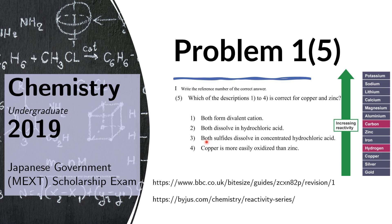The same applies to choice three: both sulfides dissolve in concentrated hydrochloric acid. Zinc is more reactive than hydrogen, so it might dissolve, but copper is less reactive than hydrogen, so it cannot replace hydrogen there. Choice four says copper is more easily oxidized than zinc, but zinc is higher in the reactivity series and thus more easily oxidized. So choices two, three, and four are incorrect, confirming the answer is one.